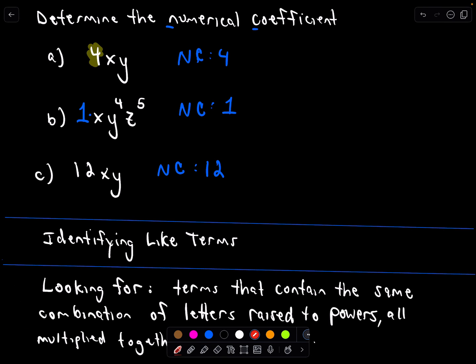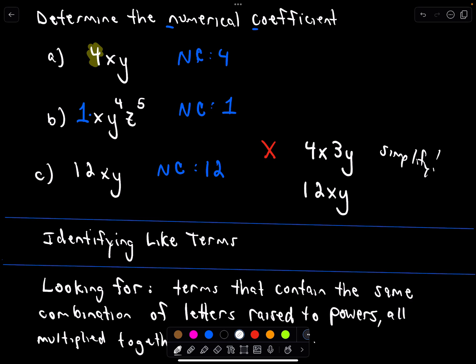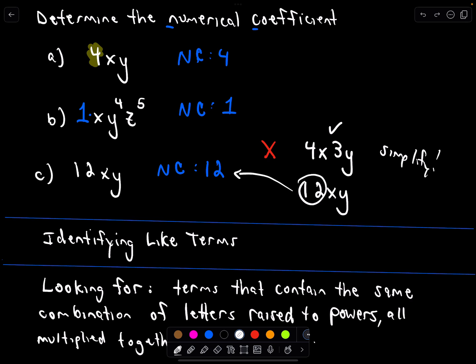Do be careful. If someone asks for the numerical coefficient of 4x times 3y, don't just say 4. Always simplify first. 4 times 3 is 12, and then we have x times y. So the numerical coefficient of 4x times 3y is 12. The moral of the story: make sure things are simplified before you pick out the numerical coefficient.